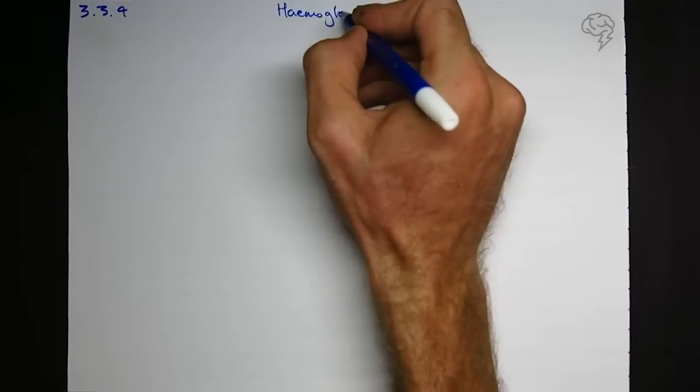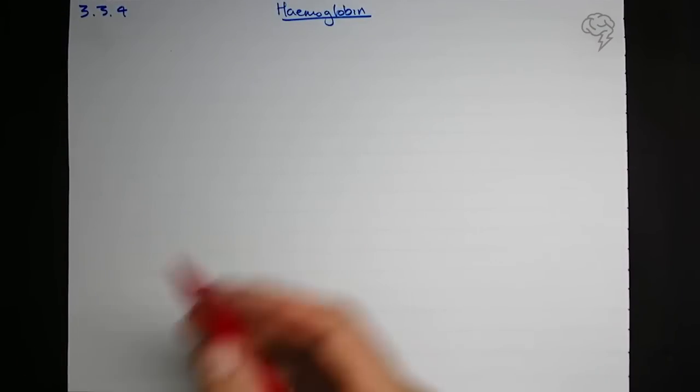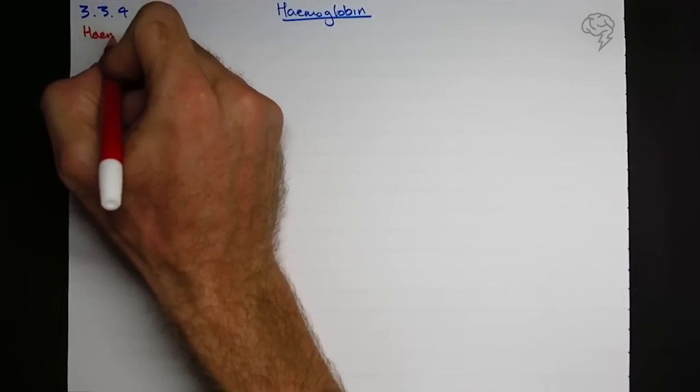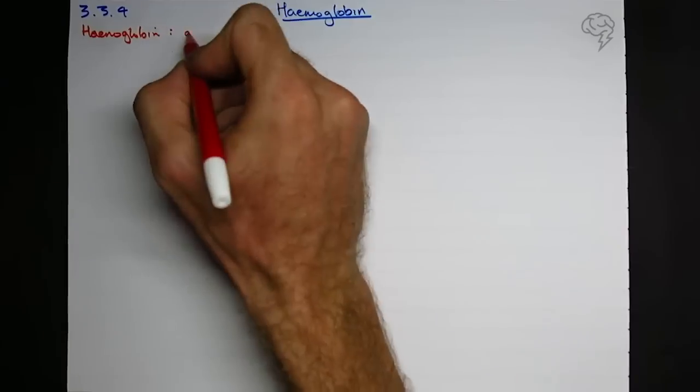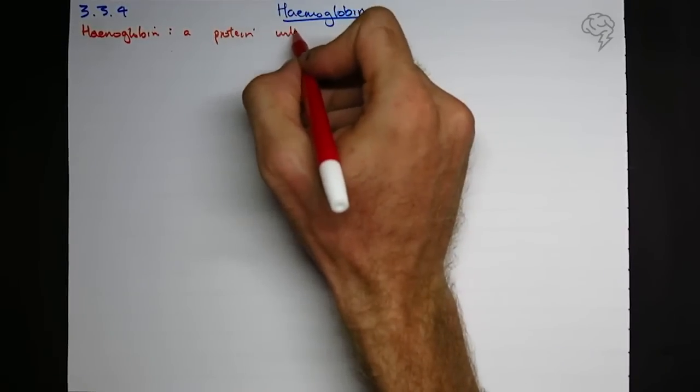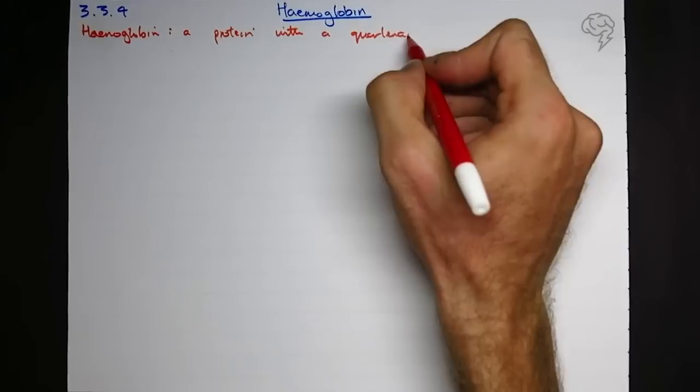Okay, so hemoglobin: what is it and how is it used and what are the regular questions that come up on this? Well, my definition for hemoglobin is not really a definition, it's going to be a protein with a quaternary structure. The reason I'm going to write that is because that tends to be the question that they ask about hemoglobin.